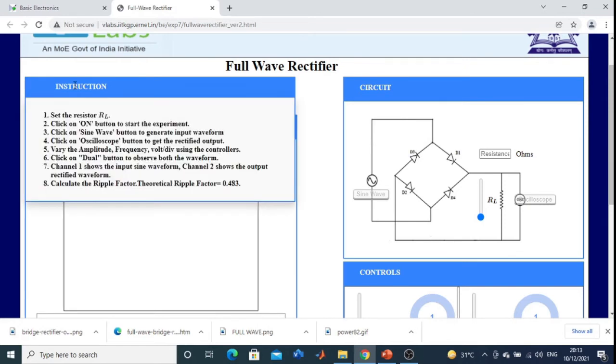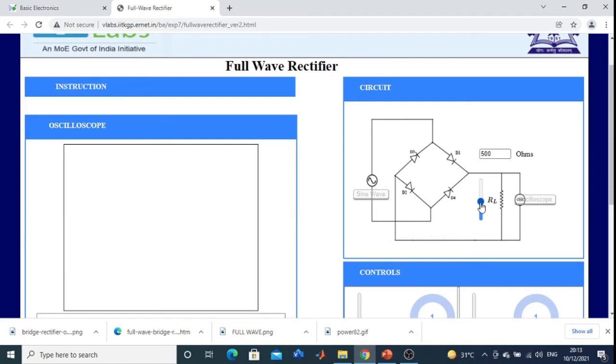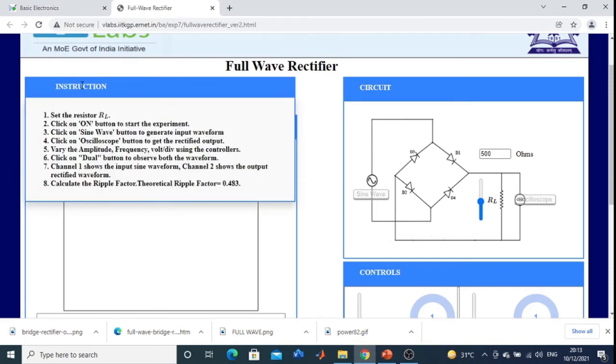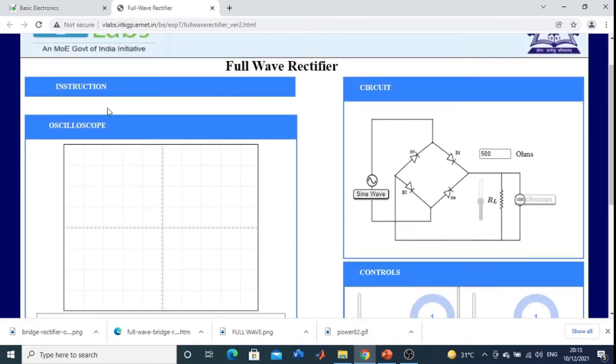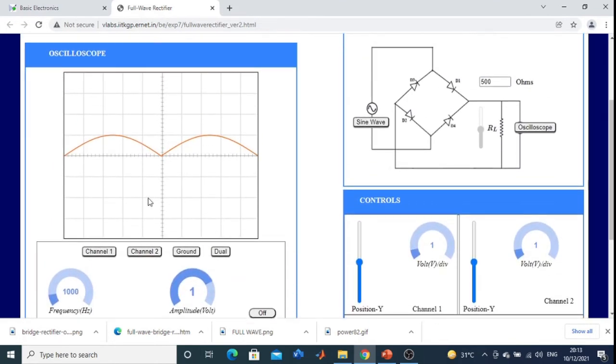So now see the instruction. Set the register value for the load register. Okay. Click on the on button. Now click sine wave. This is the input. Now click on oscilloscope to get the rectified output. What I have shown in the theory part, I am just showing in the practical part. This is your channel 1 input, channel 2 the output.